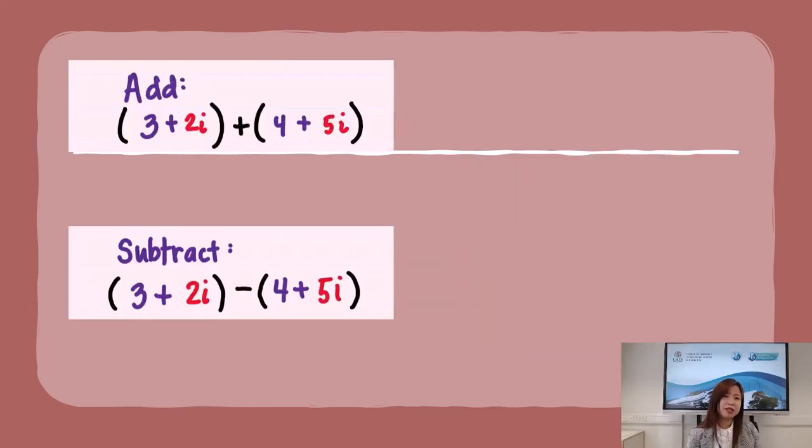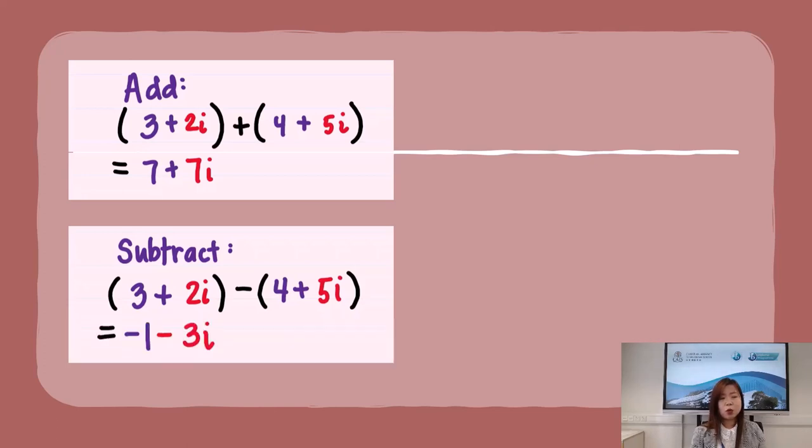And once we know about complex numbers, we can actually do a lot of similar things as we normally do with real numbers. We can add and subtract. Just note that for complex numbers, there's always a real part and an imaginary part. So when we add, we combine the real parts together. 3 + 4 = 7. And then we combine the imaginary part, 2i + 5i = 7i. So the sum of these two complex numbers is 7 + 7i. Subtraction follows a similar manner. We combine the real numbers together, which is 3 - 4 = -1. And then we combine the imaginary part, 2i - 5i = -3i. So the difference of these two complex numbers is -1 - 3i.